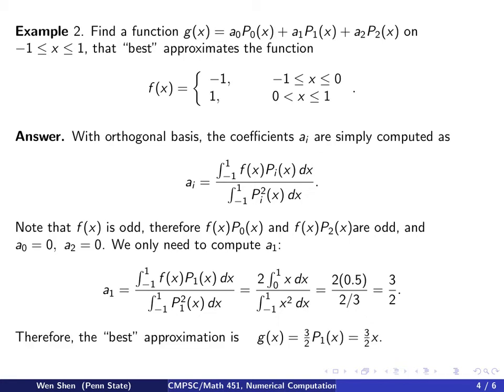Therefore, we can write out our so-called best approximation. It is simply a1 times P1, which is 3 over 2 times x.